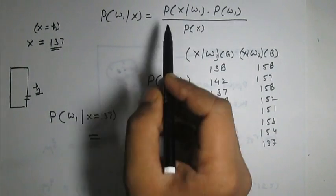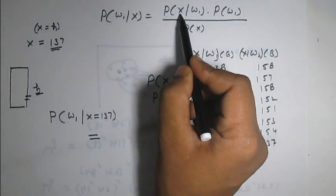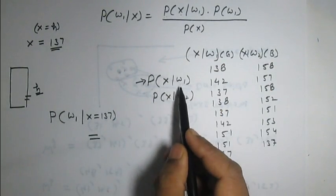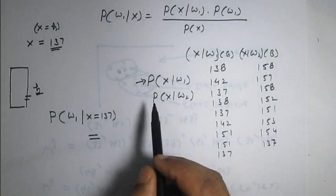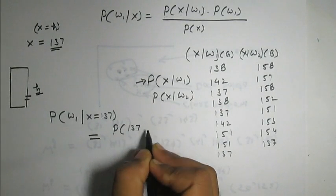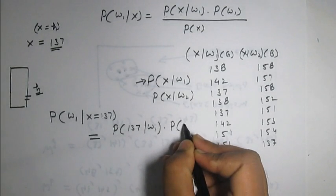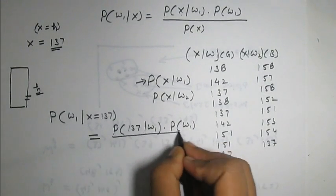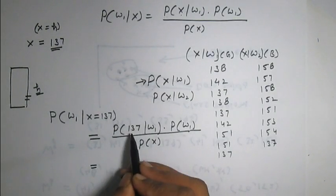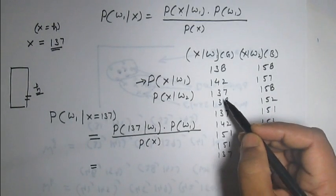Bayes' formula says this equals P(X = 137 | omega 1) times P(omega 1) divided by P(X = 137). P(X = 137 | omega 1) is calculated by counting how many events in class omega 1 had height 137 — that is 3 out of 9 total events in that class, so it equals 3 over 9.